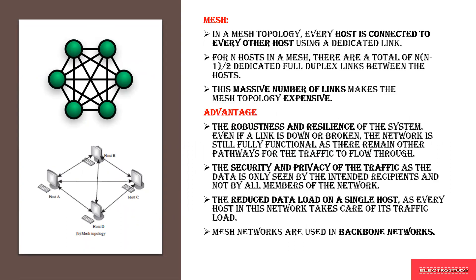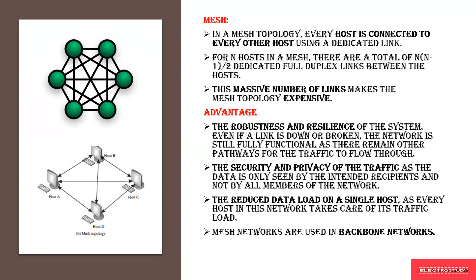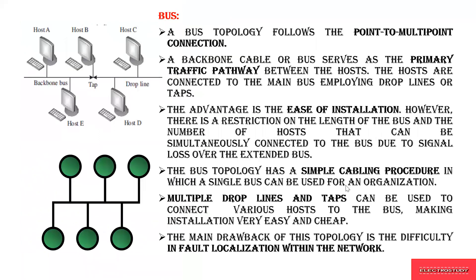In mesh topology, every host is connected to every other node. All hosts interact with all other hosts, creating a massive number of links between nodes. The best advantage of mesh topology is that it is robust — if one link is down, you can follow another path to reach a particular node. Security and privacy of data is completely maintained, data load on a single host is reduced, and mesh topology forms the backbone network as it can communicate to any number of nodes.